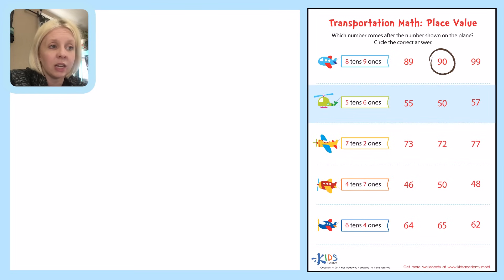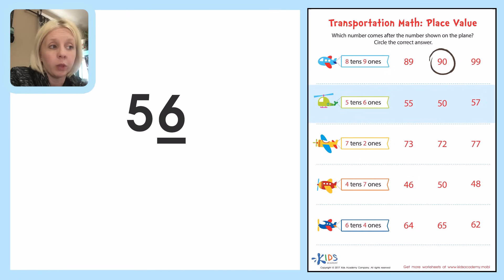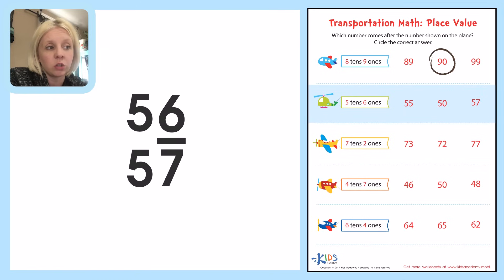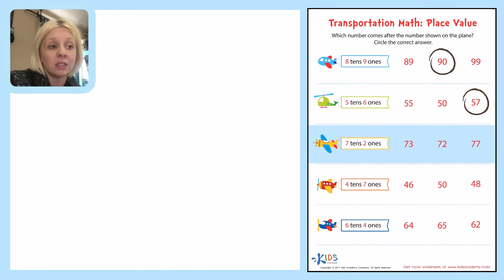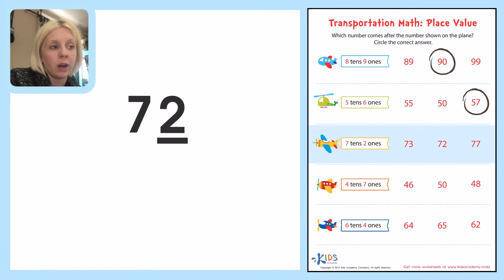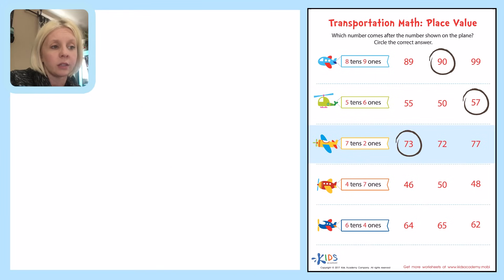The next one is 5 tens and 6 ones — that's the number 56. Normally we just look at the ones place: as long as it's not a nine, the next digit is simply one higher. What comes after six? Seven. The five stays the same, so our answer is 57 — circle it. The next one is 7 tens and 2 ones. What comes after two? Three. The seven stays the same, so we have 73 — circle it.